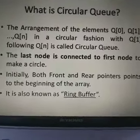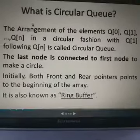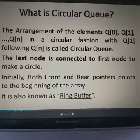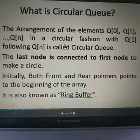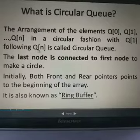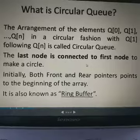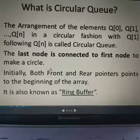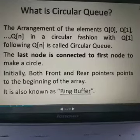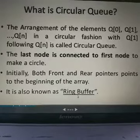Circular means the elements are arranged in a circular form. We can say that the elements at index 0 through index n are connected in a circular fashion, with Q[1] following Q[n]. That is called the circular queue, in which the last node is connected to the first node to make a circle. Initially both the front and rear pointers point to the beginning of the array, and it is also known as the ring buffer.